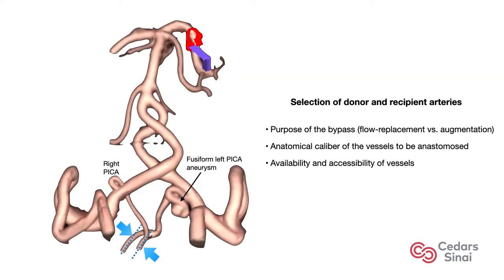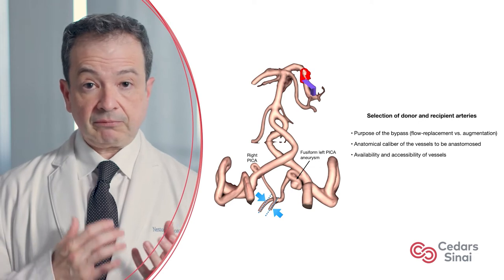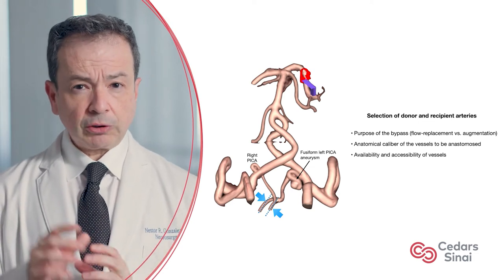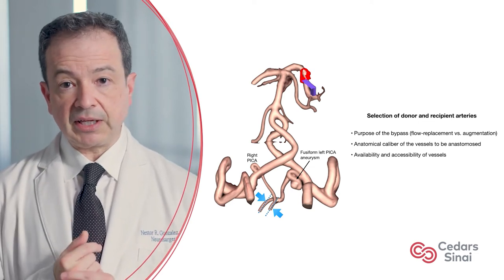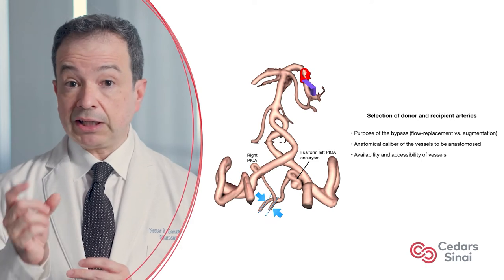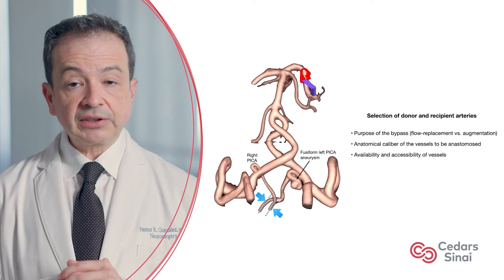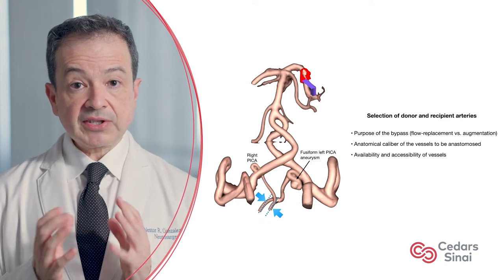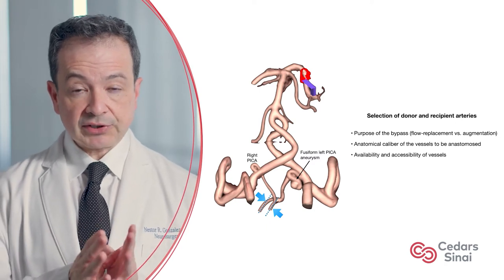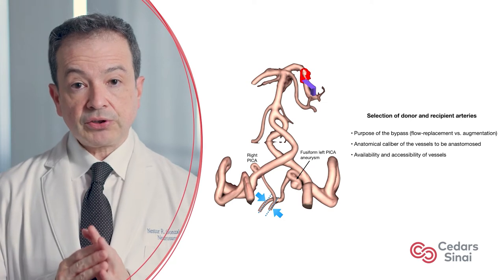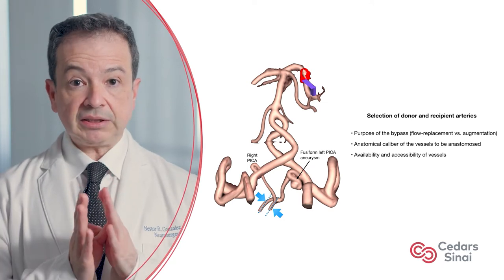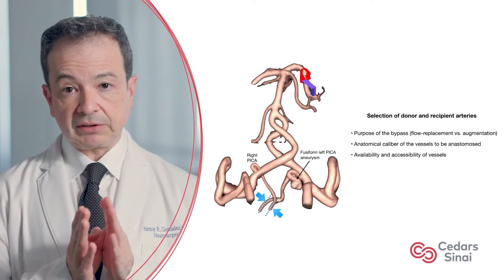The selection of the donor and recipient arteries should include considerations of the purpose of the bypass — whether it is flow replacement versus augmentation — the anatomical caliber of the vessels to be anastomosed, and the availability and accessibility of vessels. For example, for a side-to-side anastomosis, the participating arteries, usually PICA or pericallosal arteries, should run parallel and be in close proximity to avoid tension.